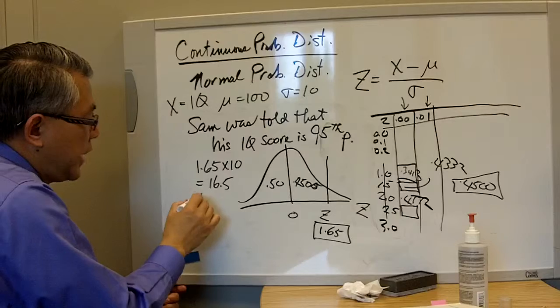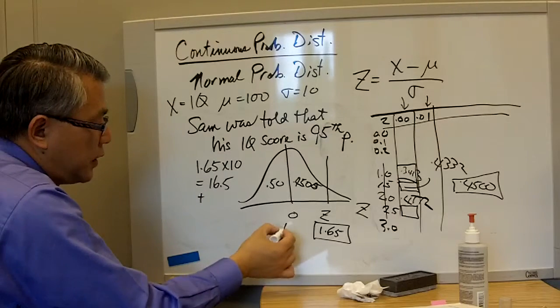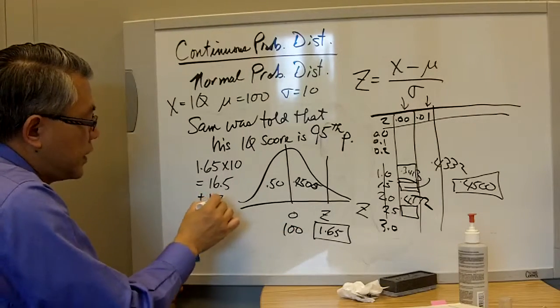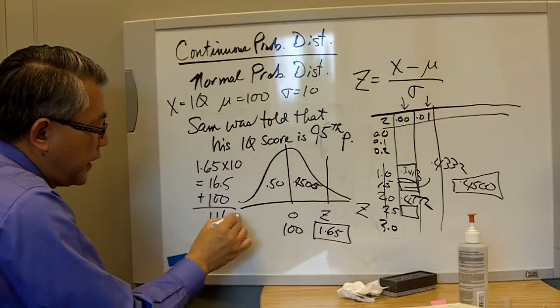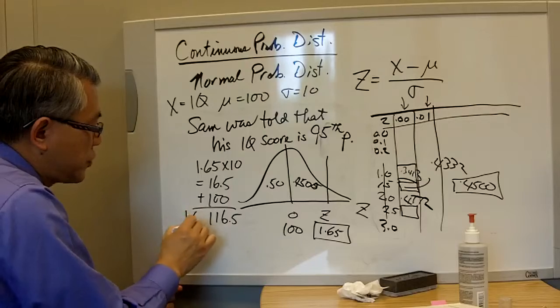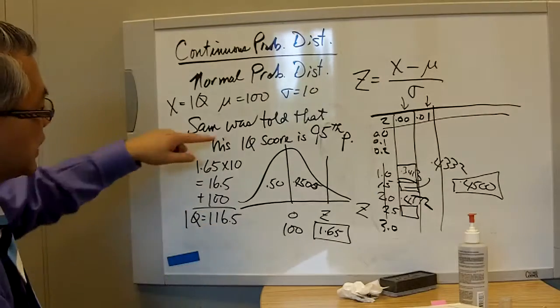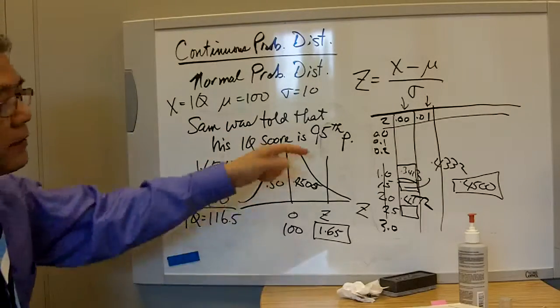And it is to be added to the average of 100, so we got 100 plus 16.5 is 116.5. That would be the IQ score for Sam that makes his score the 95th percentile.